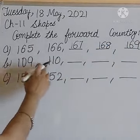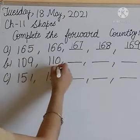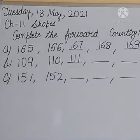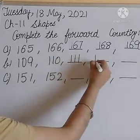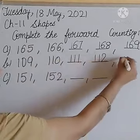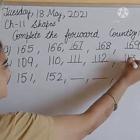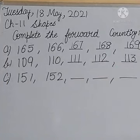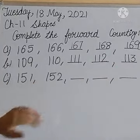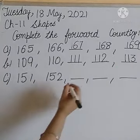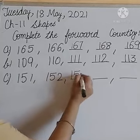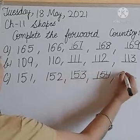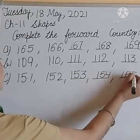Similarly, one hundred nine and one hundred ten. What comes after one hundred ten? One hundred eleven. What comes after one hundred eleven? One hundred twelve, one hundred thirteen. Now the next example: one hundred fifty-one and one hundred fifty-two. What comes after one hundred fifty-two? One hundred fifty-three, one hundred fifty-four, and one hundred fifty-five.